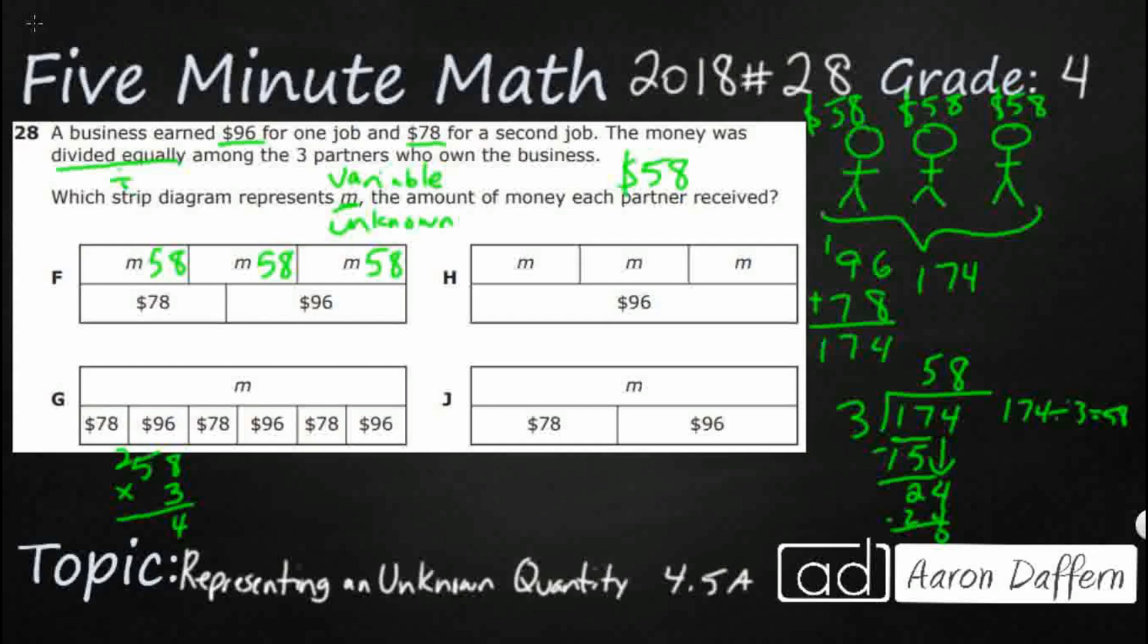3 times 5 is 15, add that 2. So this is 174. And then I've got my $78 and my $96, and I've already done that right there. That's also 174. So that strip diagram does look good. They kind of flipped it. I would expect this total right here to kind of be on the top.